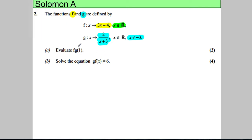For two marks, evaluate f of g of 1. So we want to work out f of g of 1. To start with, obviously start off by working out g evaluated at 1. So that would be 2 divided by 1 add 3, which is 2 divided by 4, which is equal to a half.